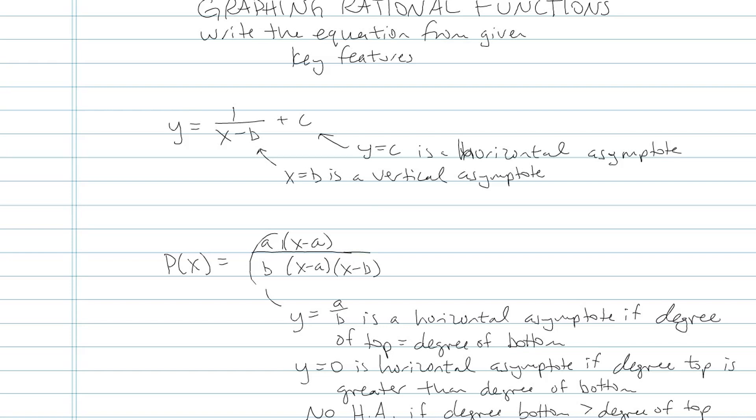For rational functions, there's a couple different ways you could write the equation. The first way looks like y equals 1 over x minus b plus c. In this equation, this is one of my personal favorites. It's used a lot for transformations, and in my opinion, this one's more simple than the other.